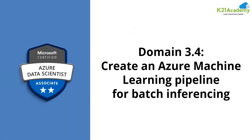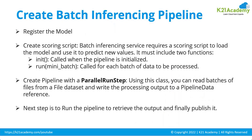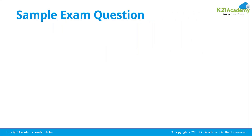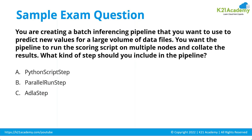In machine learning, batch inferencing is used to apply a predictive model to multiple cases asynchronously — like the hospital scenario. When writing the code, we use the initialize and run methods, and to create a batch pipeline we use the parallel run step. So when creating a batch inferencing pipeline, the answer is B: parallel run step.